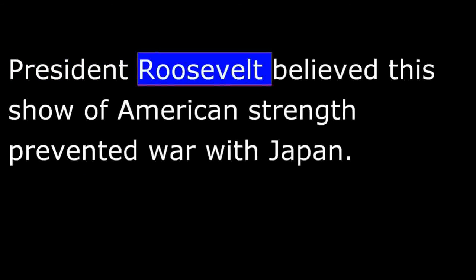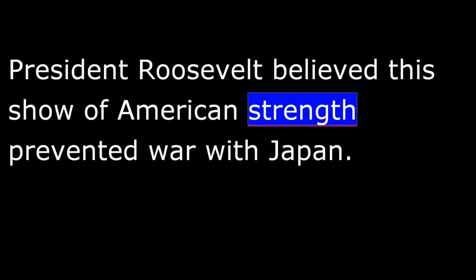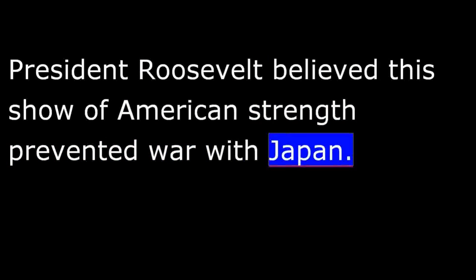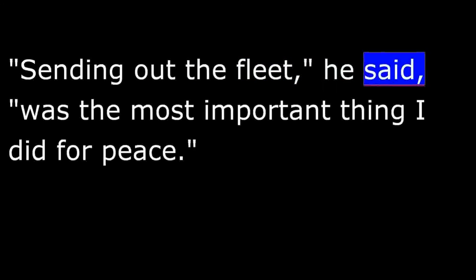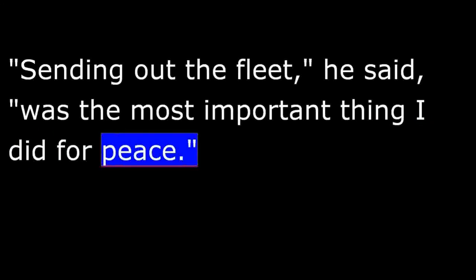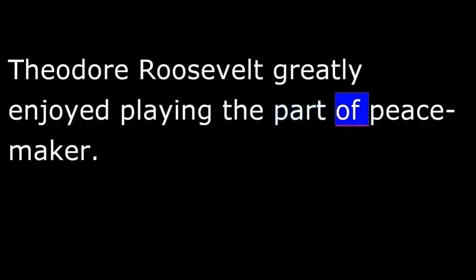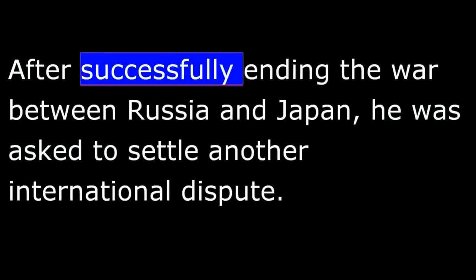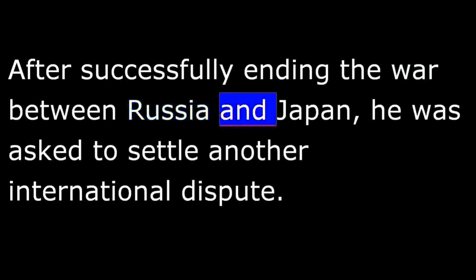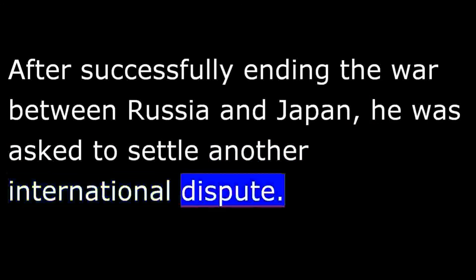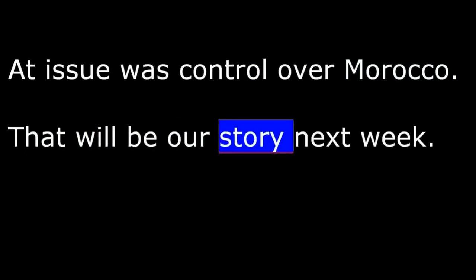An American reporter said, 'The fleet made a deep and far-reaching impression. It caused the Japanese to understand the great power of the United States as nothing else could possibly have done.' President Roosevelt believed this show of American strength prevented war with Japan. Sending out the fleet, he said, was the most important thing I did for peace. Theodore Roosevelt greatly enjoyed playing the part of Peacemaker. After successfully ending the war between Russia and Japan, he was asked to settle another international dispute — control over Morocco. That will be our story next week.